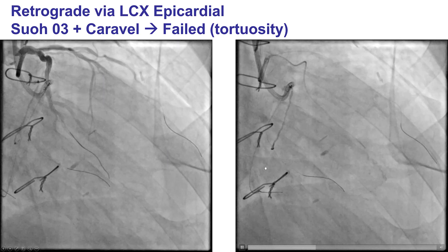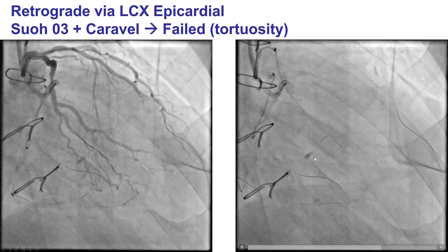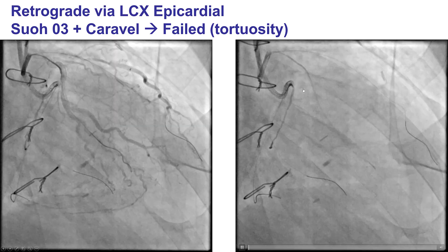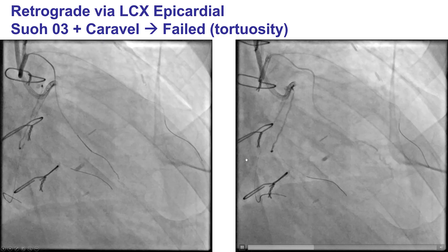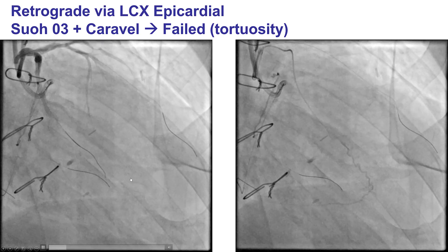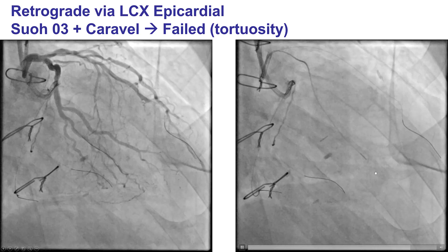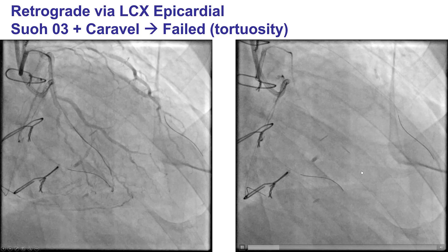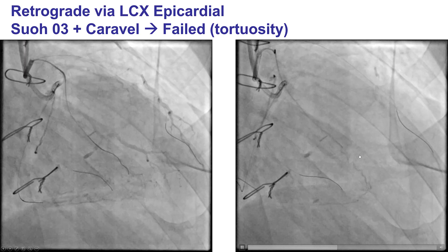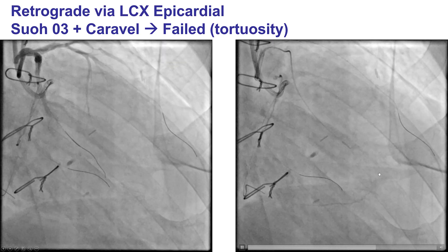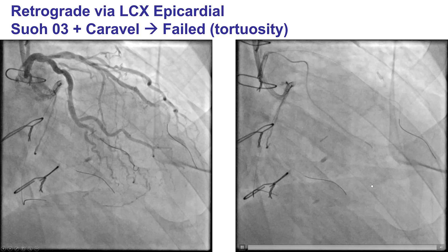We decided to attempt crossing through an epicardial collateral coming from the circumflex. That collateral was fairly tortuous, as can be seen on selective injection. We tried to cross it using a Suoh 03 guide wire, but we were unable to get through.